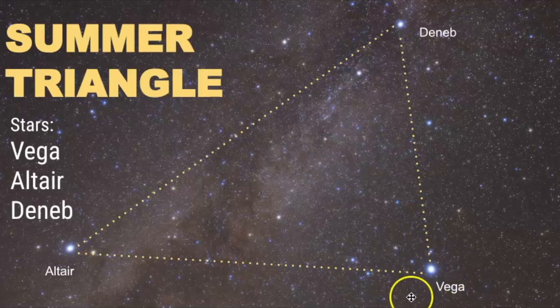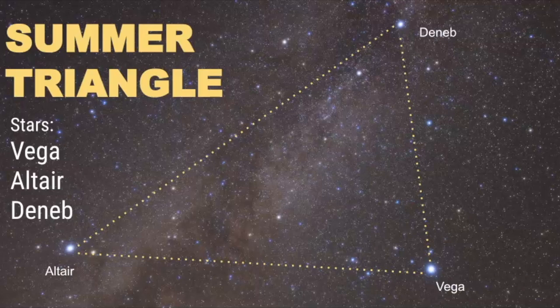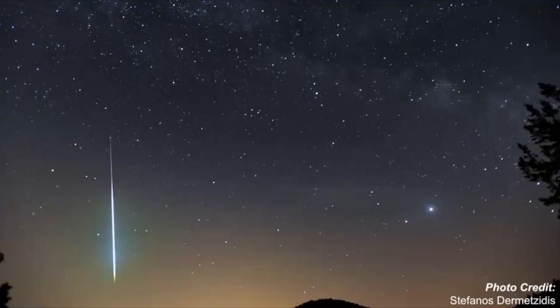But the stars that it connects are Vega, Deneb, and Altair. Vega is the brightest of the three. So if you can make this pattern in the sky, then you know, okay, Vega is going to be the brighter one and therefore I can find Lyra.